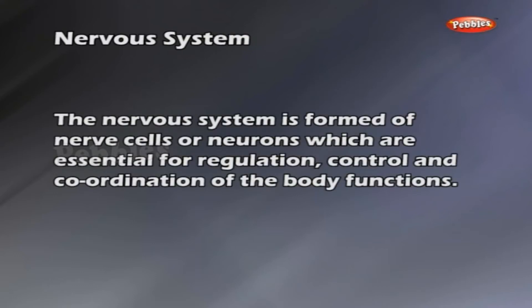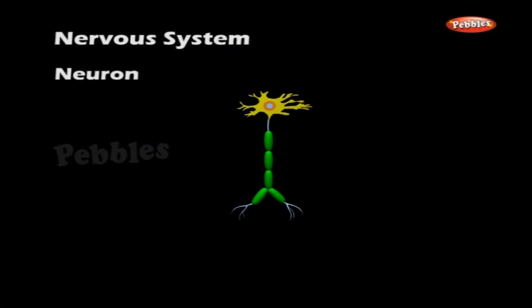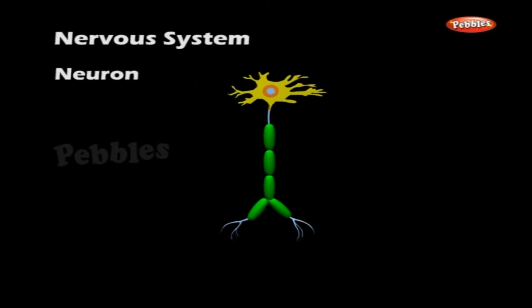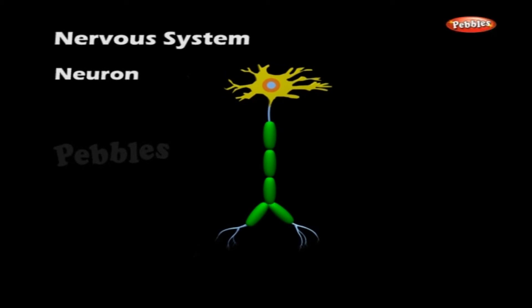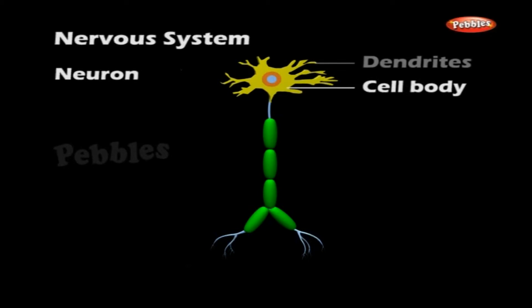These are essential for regulation, control and coordination of the body functions. A neuron has a cell body called cytone with one or more protoplasmic processes extending from it. The long processes are called axons which conduct impulse from the cell body. The short processes are called dendrons or dendrites which conduct impulse towards the cell body. The axons and dendrites are collectively known as nerve fibers.